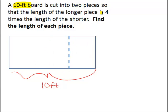The length of the longer piece is four times the length of the shorter. So that's going to be the key to understanding this problem. So the shorter piece is unknown, and we're going to call it X. And we also see that the longer piece is four times the length of the shorter. So four times X, or 4X, will be the length of the longer piece.